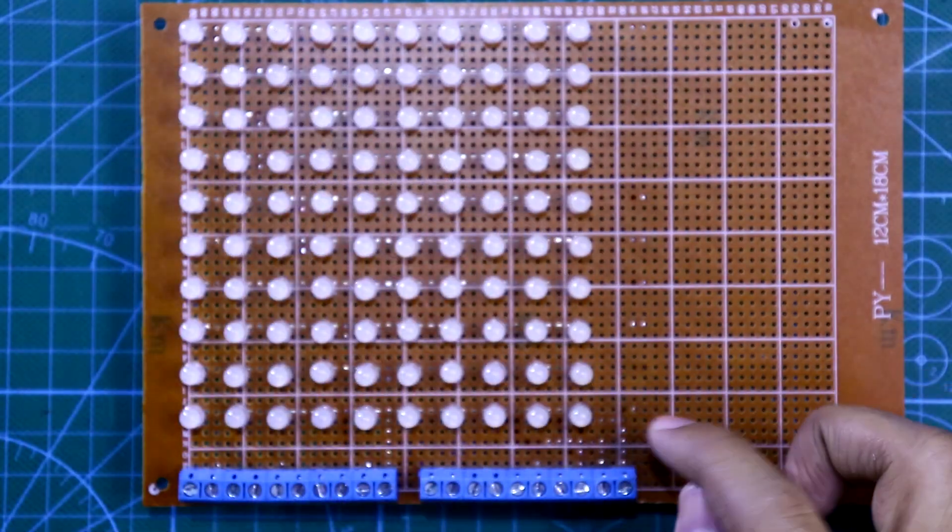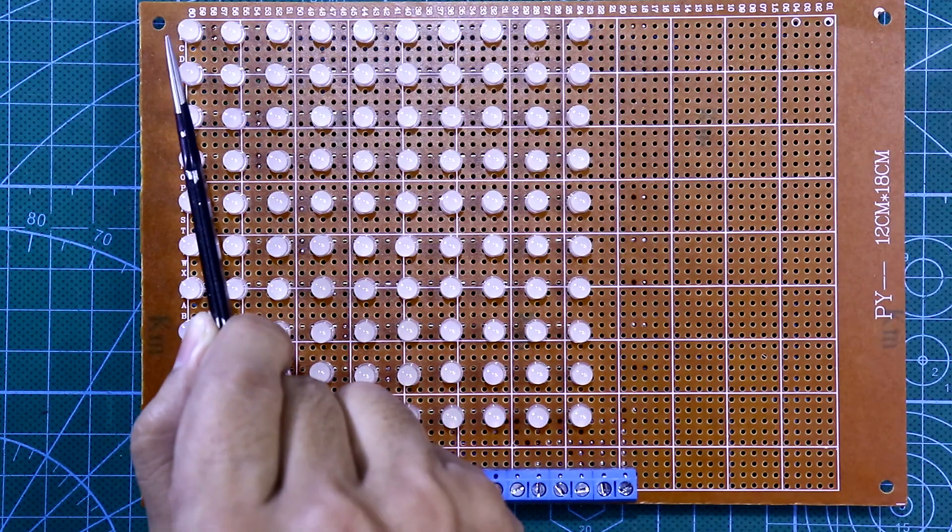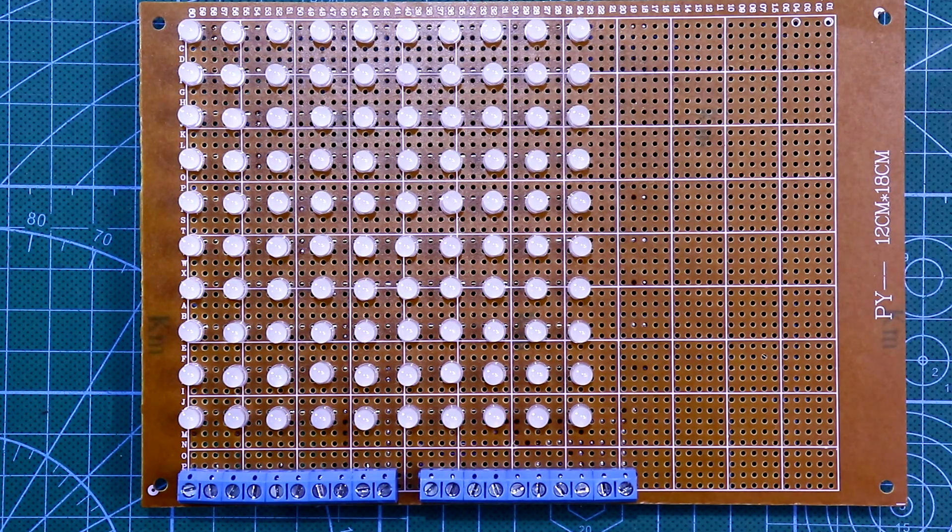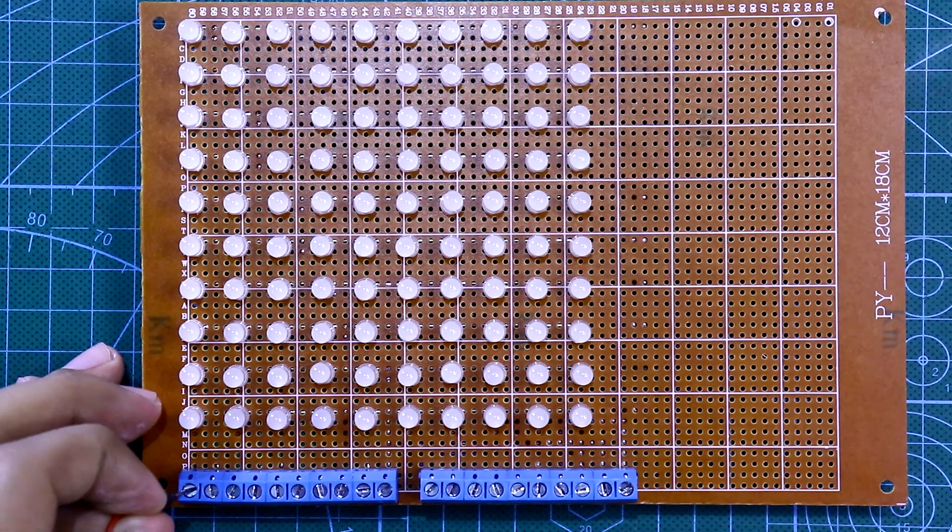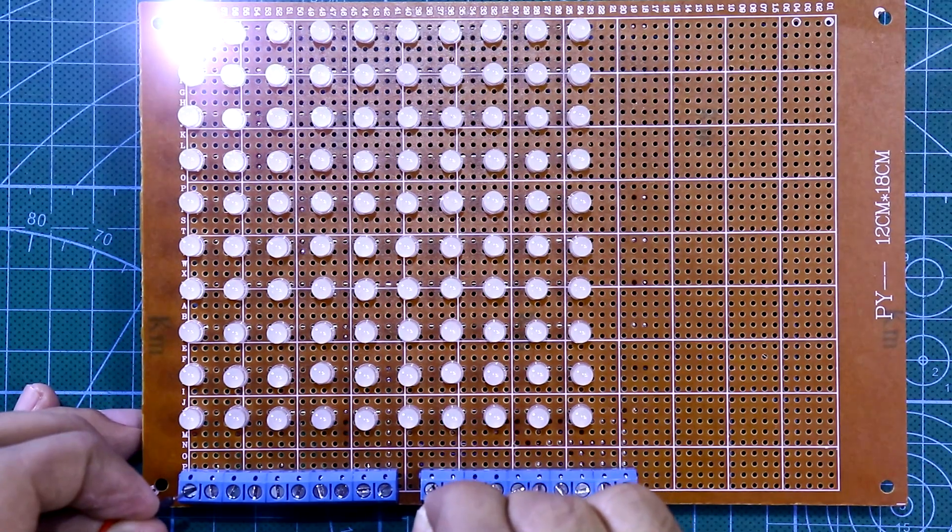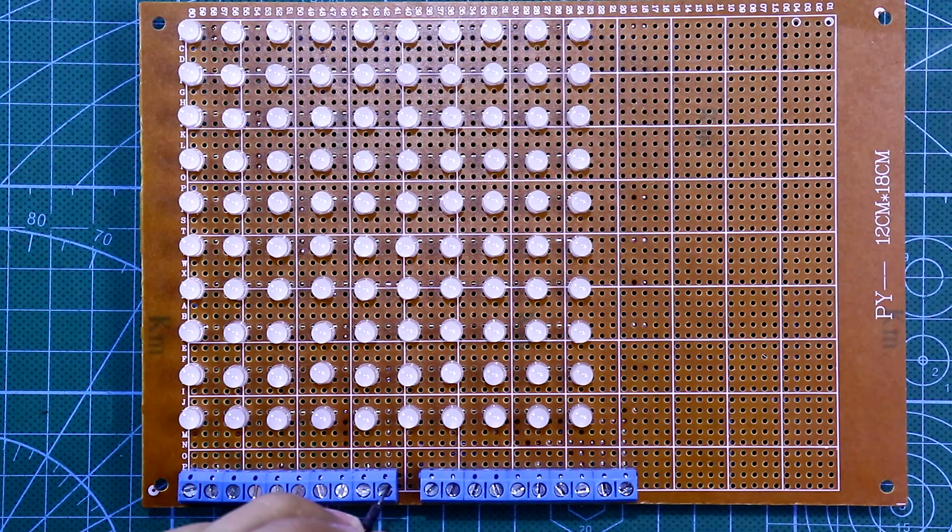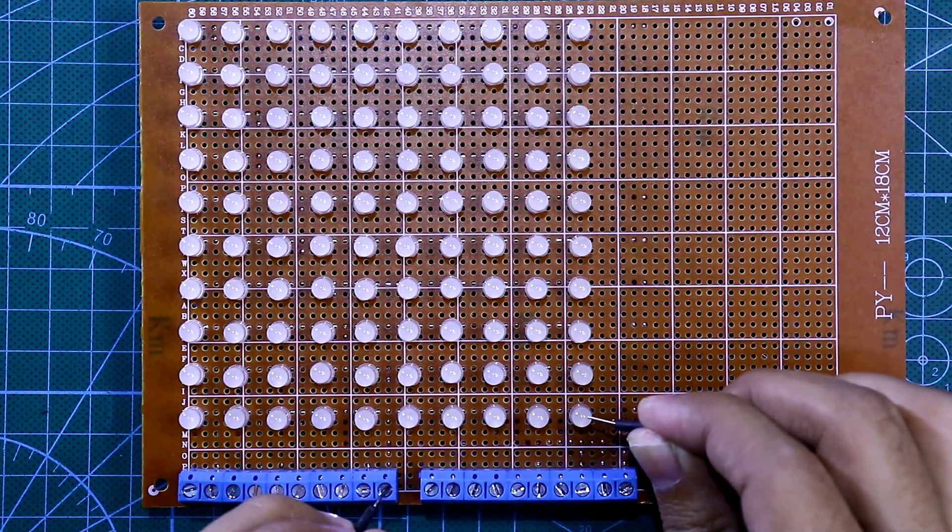This is the first LED and this is last LED. This LED will glow when first row and first column are connected to the power supply. Here is positive and the negative - first LED is glowing. Last row last column - it is last LED.